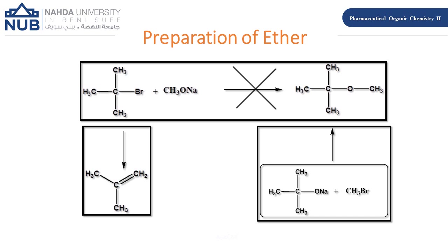For preparation of a tertiary alkyl ether, if we use tertiary RX with CH₃ONa, we obtain the alkene as CH₃ONa acts as a strong base and abstracts HBr. Instead, we use sodium tert-butoxide (sodium tertiary butoxide) with methyl bromide (CH₃Br) as the RX, and we can obtain the desired tertiary ether product.